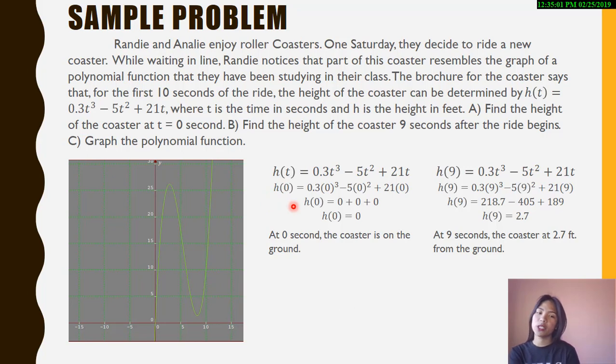This is the solution for question letter A. h(t) = 0.3t³ - 5t² + 21t. We are going to substitute 0 seconds where t is the time. h(0) = 0.3(0)³ - 5(0)² + 21(0), so h(0) = 0. At 0 seconds, the coaster is on the ground.